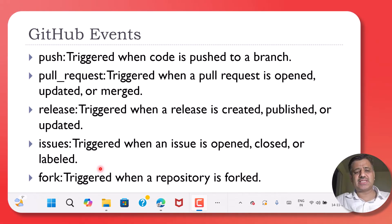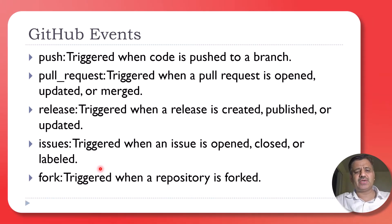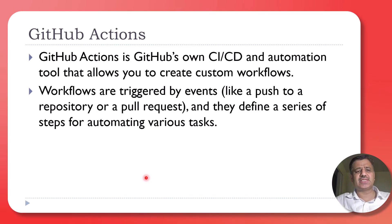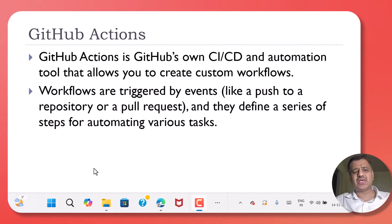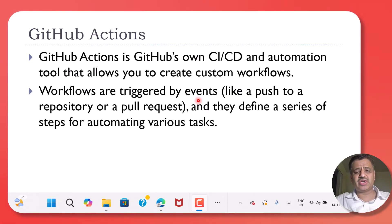Whenever these events happen, the workflow action will automatically trigger. GitHub Actions are the workflows which are triggered by these events. All the events discussed previously can cause the triggering of a workflow, and they define a series of steps that automate various tasks.